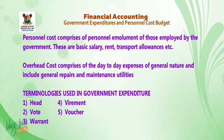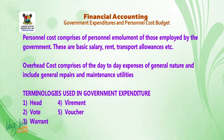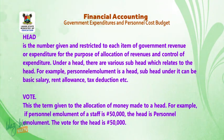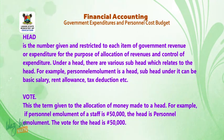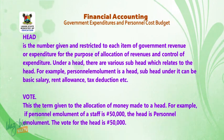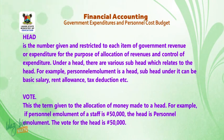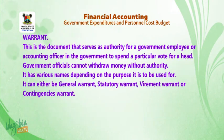Terminologies used in government expenditure: one, head; two, vote; three, warrant; four, virement; five, voucher. Head is the number given and restricted to each item of government revenue or expenditure for the purpose of allocation of revenues and control of expenditure. Under a head there are various sub-heads which relate to the head — for example, personnel emolument is a head, and sub-heads under it can be basic salary, rent allowance, tax deduction, etc. Vote is the term given to the allocation of money made to a head — for example, if the personnel emolument of a staff is ₦50,000, the head is personnel emolument and the vote for that head is ₦50,000.